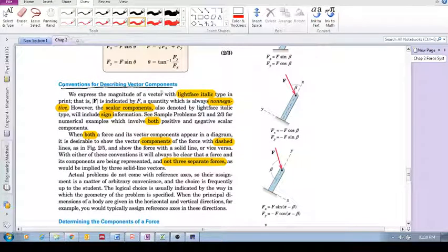When they write it in the textbook, the magnitude of a vector is always in lightface italic. So it's not in bold, but it's in lightface and italic. And this quantity is always non-negative, F. Always a positive value.